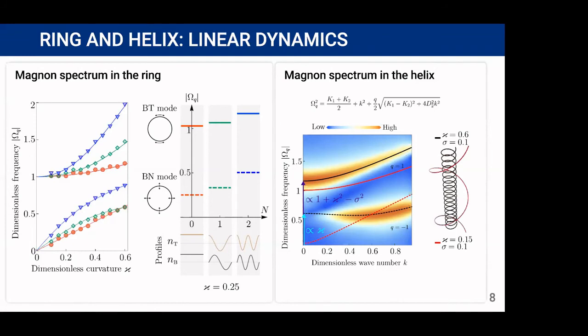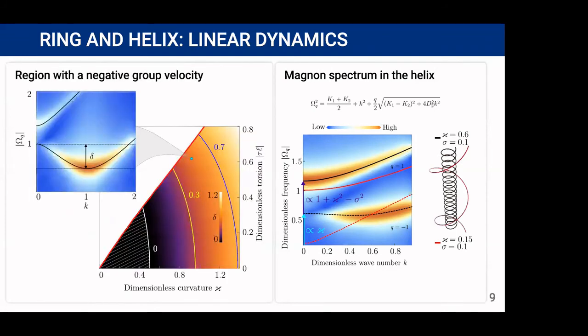Moreover, the geometry induced Dzyaloshinskii-Moriya interaction results in the emergence of a region with negative group velocity, followed by the local minimum of dispersion curve with depth delta. And the depth of this minimum delta increases with the curvature and torsion.